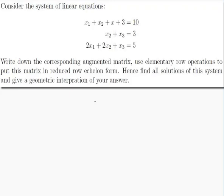Write down the corresponding augmented matrix, use elementary row operations to put this matrix in reduced row echelon form, hence find all solutions of this system, and give a geometric interpretation of your answer. So we've got four things to do there, we'll tackle them one at a time.